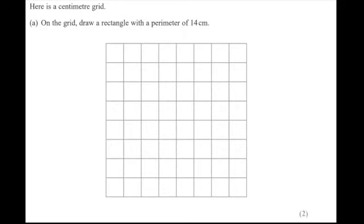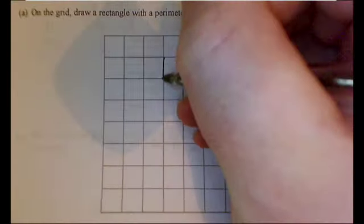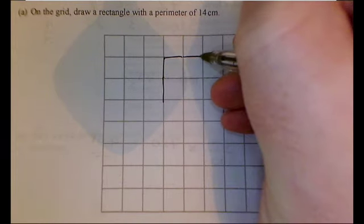Right, so I've got to draw a rectangle with a perimeter of 14, which means that's a four-sided shape. So if two sides have length 7, then I should have a rectangle with 14, shouldn't I, because two 7s are 14.